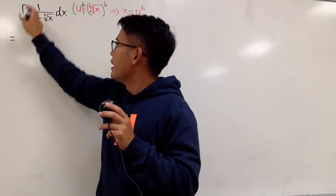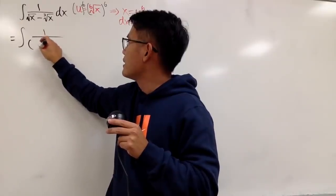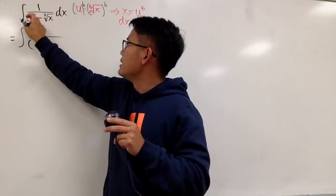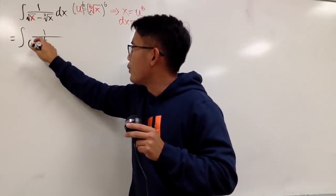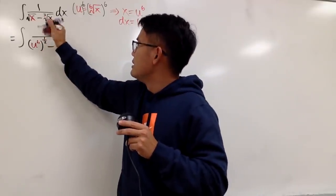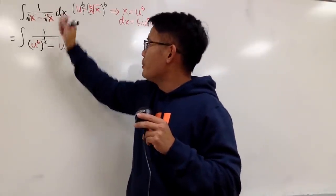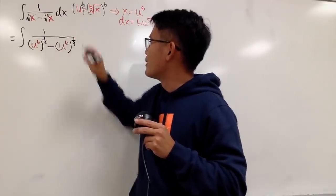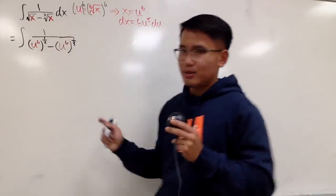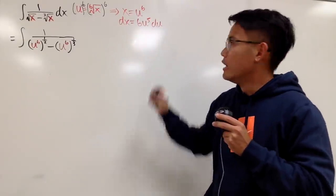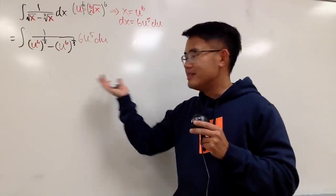So here we go. This is the integral of 1 over — let me write the square root as the 1/2 power. The x inside is u^6, so we have (u^6)^(1/2) in the denominator. We subtract the same x, which is u^6, but the cube root means we raise it to the 1/3 power, giving (u^6)^(1/3). Now you see the beauty — you get whole number powers. And don't forget, dx becomes 6u^5 du. This is going to be much cleaner.